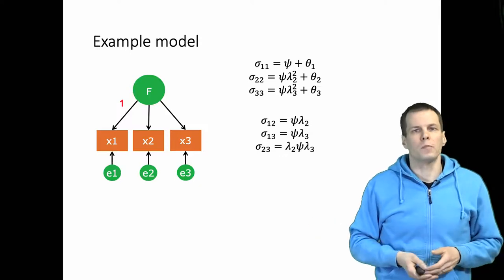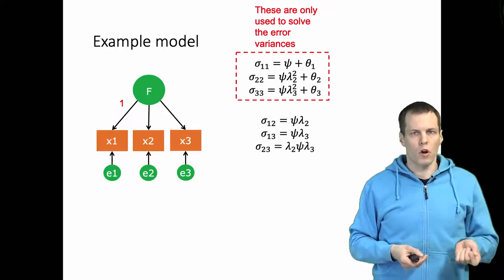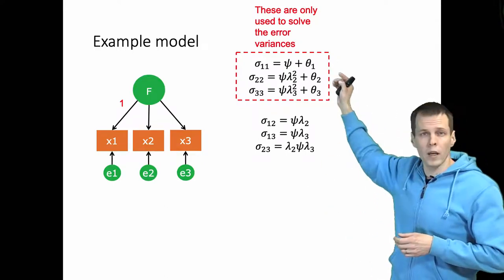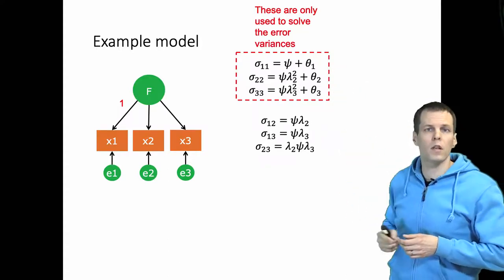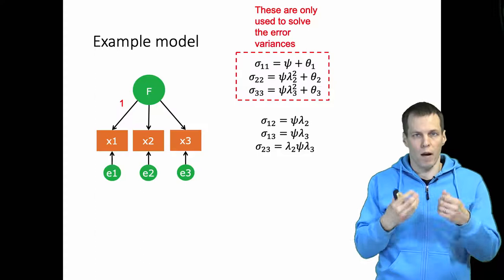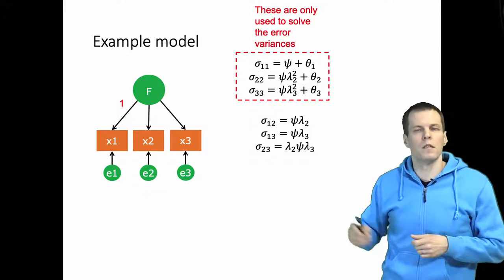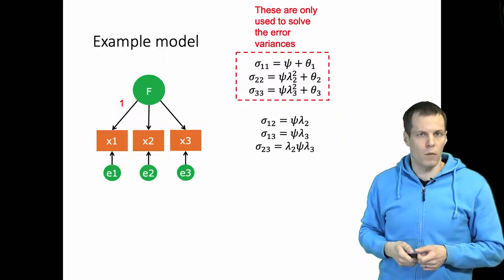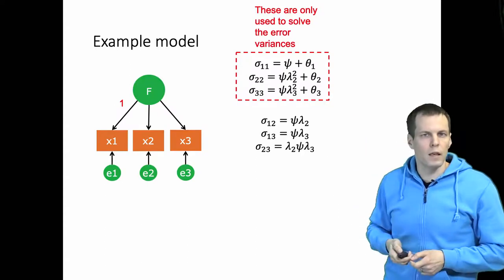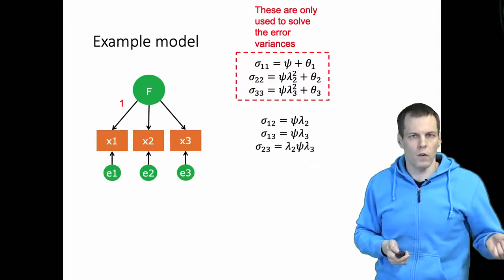The first thing to observe is that the three diagonal equations are simply used to solve the error variances. Theta_1 occurs only in the first equation, theta_2 only in the second, and theta_3 only in the third. We need those three equations to solve those three parameters and cannot use them for anything else. So we focus on the three off-diagonal covariances — sigma_12, sigma_13, sigma_23 — and try to solve the two factor loadings lambda_2 and lambda_3, and the factor variance psi, from those equations.